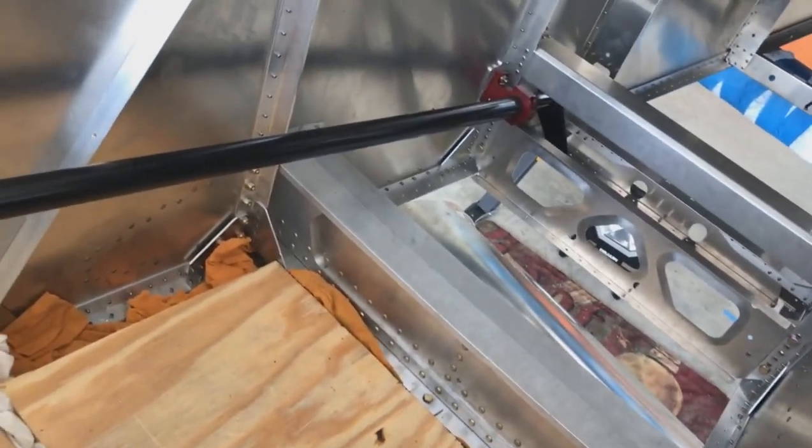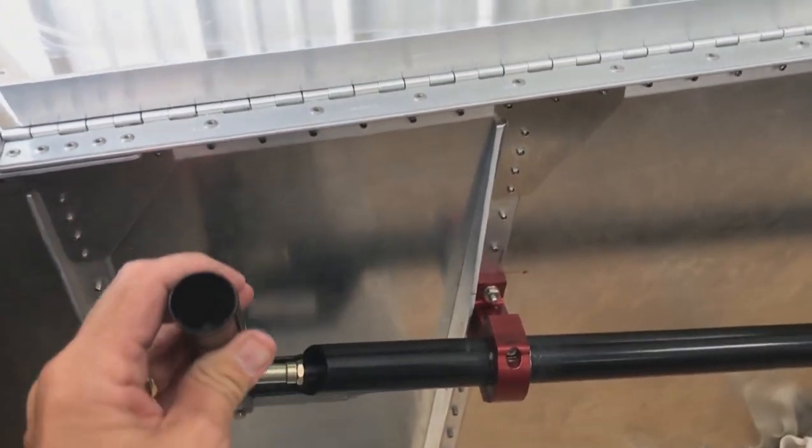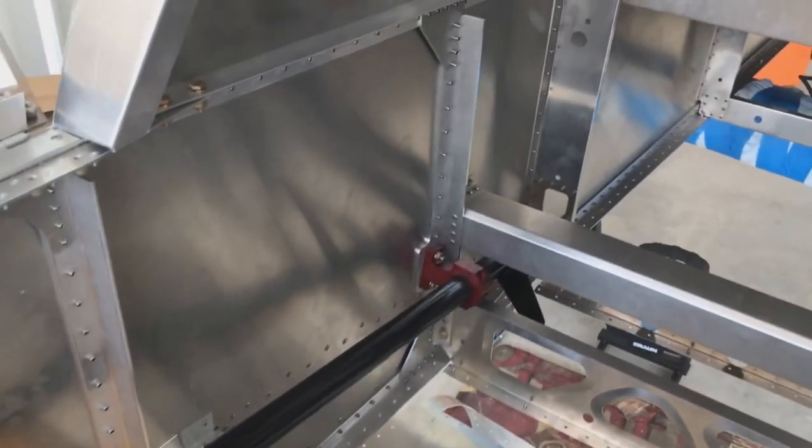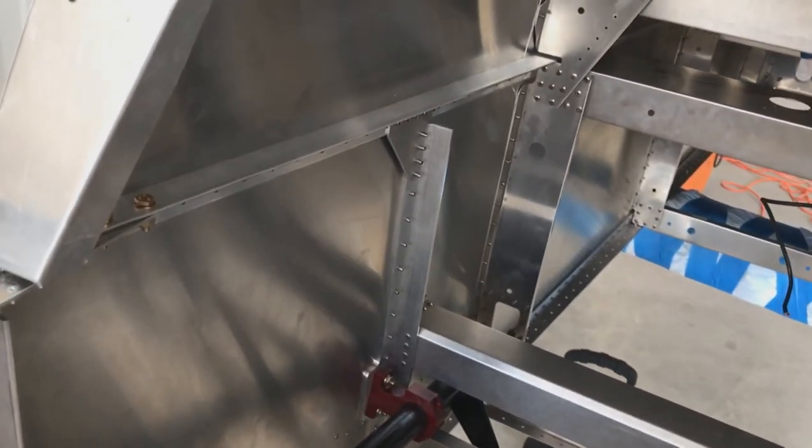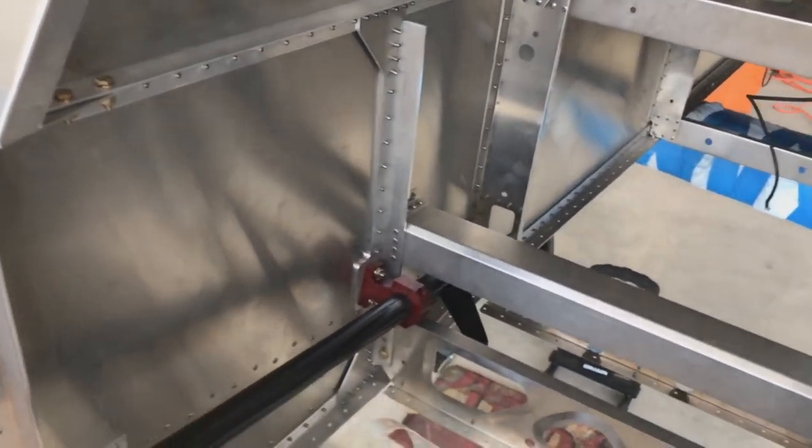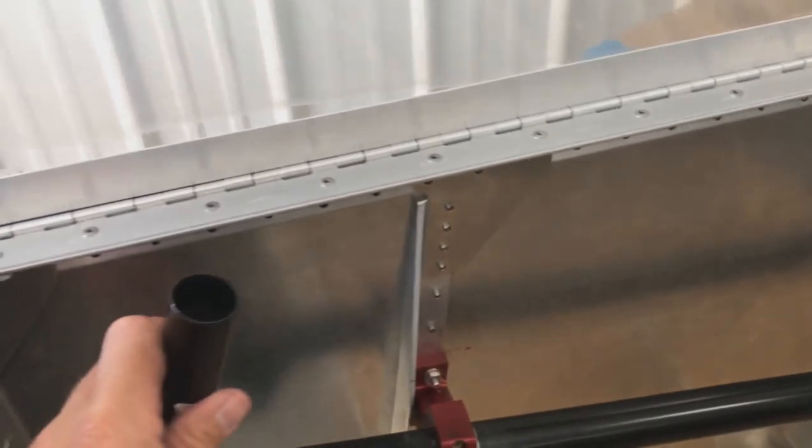When you do this, of course, you're moving the ailerons which banks the airplane. Then you go back and forth like that. It's connected to the mixer which connects to the rudder pedal push rods that go back to the rudder pedals. That of course controls your pitch. This is like step one in the control system.